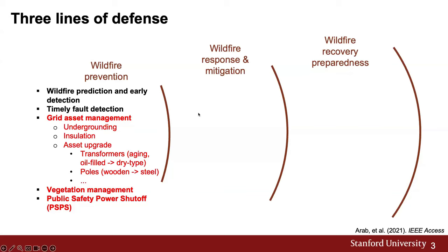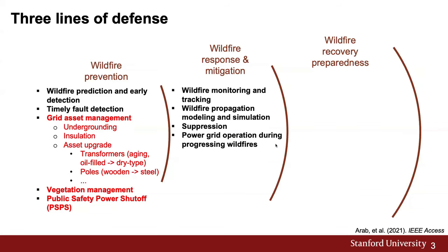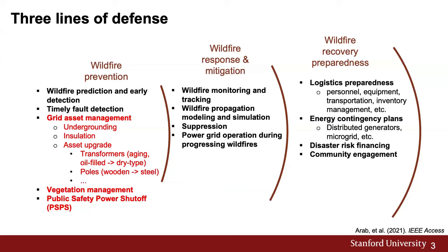The second line of defense is wildfire response and mitigation, used during or after a wildfire occurs. That includes wildfire monitoring and tracking, and also modeling and fire suppression. The third line of defense is how we can make the community quickly recover from the disaster afterwards — through proper preparation, improving logistics, and making energy contingency plans in advance.